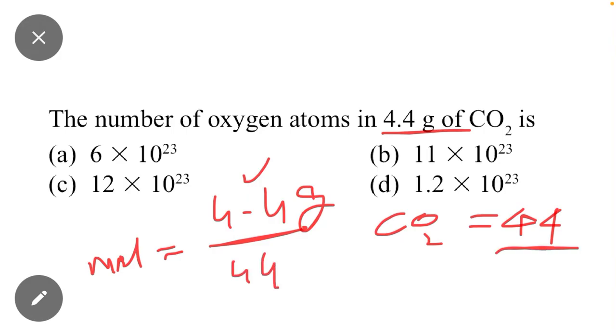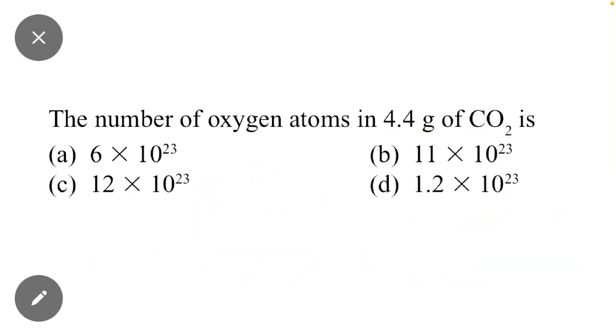And the answer will be 0.1, and now multiply with 6.02 × 10²³. 4.4 divided by 44 and multiply by 6.02 × 10²³. So after completing calculation, the answer will be the option of this question.